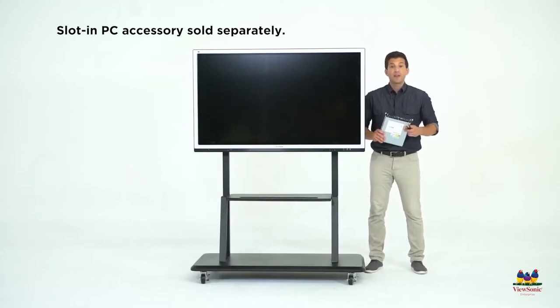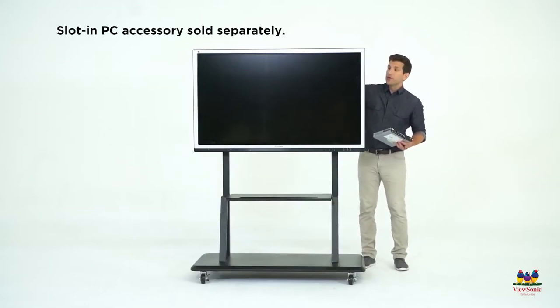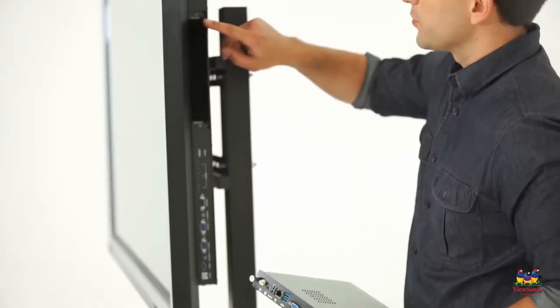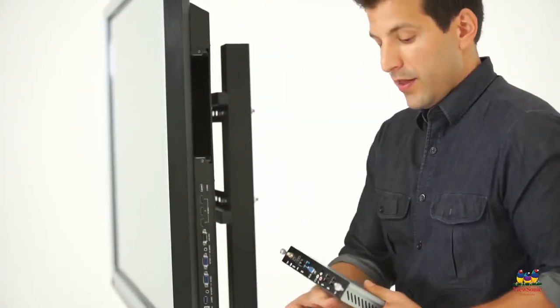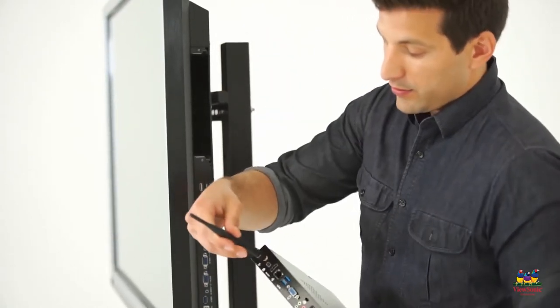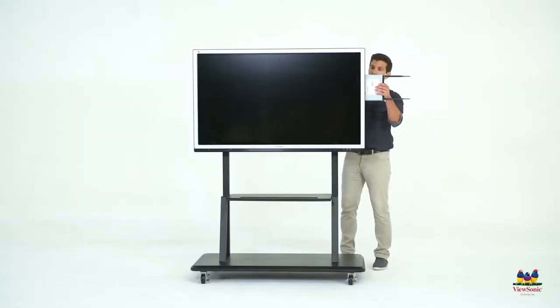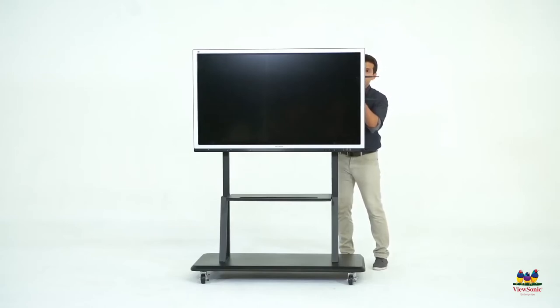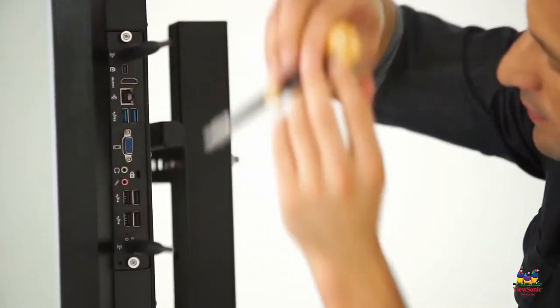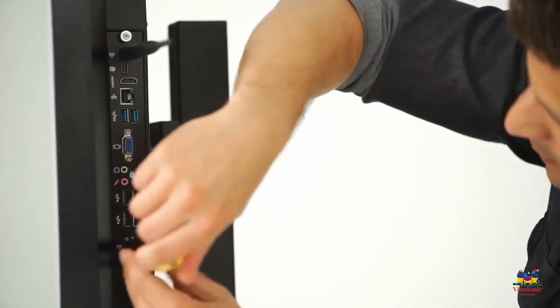Now we'll show you how to install the optional slot-in PC. First thing you would do is remove the plate that's right here with the two screws. This has already been removed. Then we're going to attach our antenna to the slot-in PC and this will just easily push in the open slot here on the back of the unit. You'll feel a little resistance, push, and then you'll just screw in these two up here.